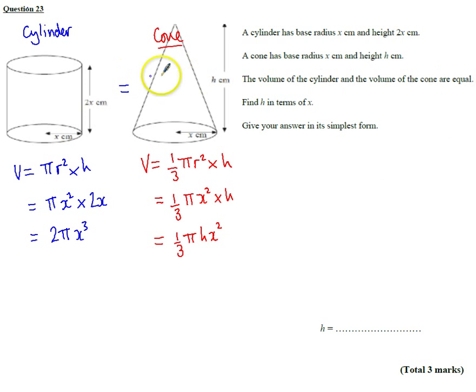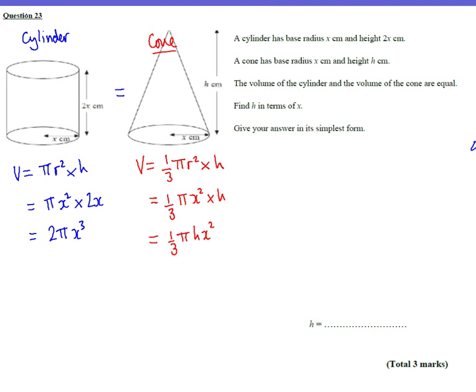Now the key point is that they are equal, the volumes are equal. So we can make these two expressions equal, we can make the cylinder equal the cone. So let's do that. I might just come over here for this, so if I just get a dotted line, just put that there.